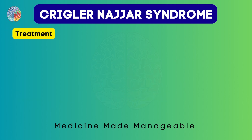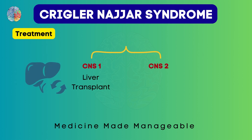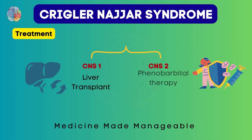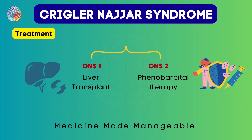Treatment will depend on the type of Crigler-Najjar syndrome. In type 1, since there are no enzymes, we will have to do liver transplantation. But in type 2, we can give phenobarbital therapy, since there are at least some enzymes that are working.